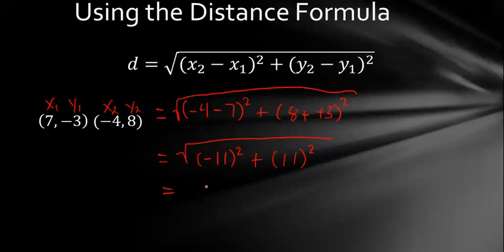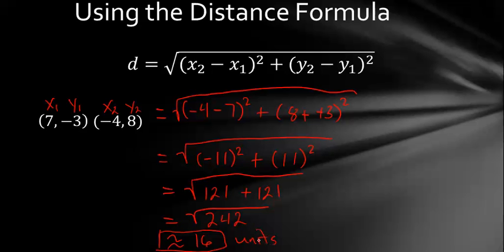Now we go ahead and square it. Square means -11 times -11, which will give us a positive 121. And 11 times 11 is also positive 121. Add that result together, we get 242. And the square root of 242 is about 16. Okay. So the distance between these two points is about 16 units. And I can put units since we don't know feet, inches, squares, whatever.